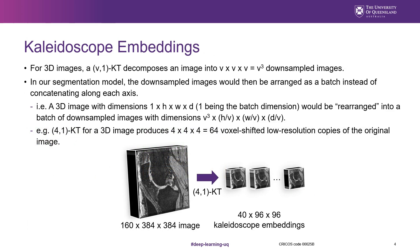In our 3D segmentation model, the downsampled images would be arranged as a batch instead of concatenating along each axis. For example, the images used in our study have the dimensions of 160 × 384 × 384. So a Collidoscope Transform with a downsampling factor of 4 would rearrange this 3D image into a batch of 64 voxel-shifted low-resolution copies of the original image, with dimensions of 40 × 96 × 96.